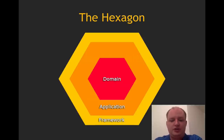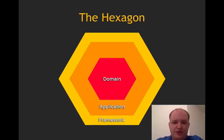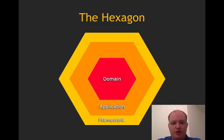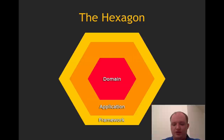Here we see the Hexagon. The Hexagonal Architecture is called Hexagonal Architecture because of this image — the Hexagon. The Hexagon is a symbol with six sides, and they represent actually six different ways of communicating with the system. As of today, you can actually communicate any number of times with the system, but this is how Hexagonal Architecture was named anyway.